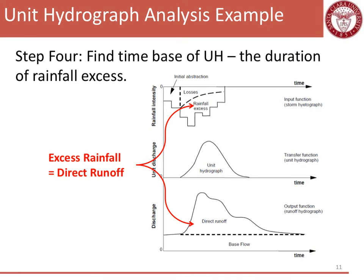Our last step is to find the time base of this unit hydrograph. We want the duration. Right now it's just called a T star, but we want to figure out that duration. So we have to figure out how long we had rainfall excess. We want that unit of rainfall, that one centimeter, we want to see how long it took to get that one centimeter once we take away all of the infiltration and other abstractions and losses.